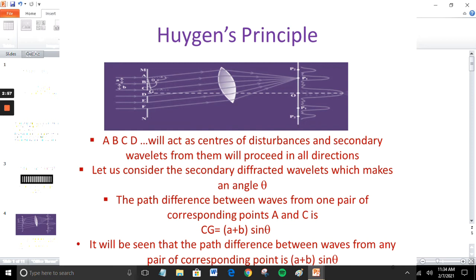The path difference between the wavelets from one pair of corresponding points A and C is CG equal to (A + B) sin theta. It will be seen that the path difference between waves from any pair of corresponding points is (A + B) sin theta.